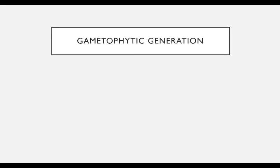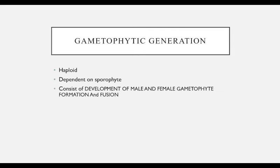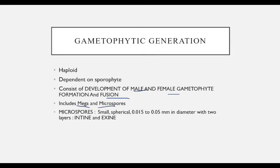Gametophyte generation: it is haploid and depends on the sporophyte. It consists of the development of male and female gametophytes and then the fusion of egg and sperm. It includes both megaspores and microspores.